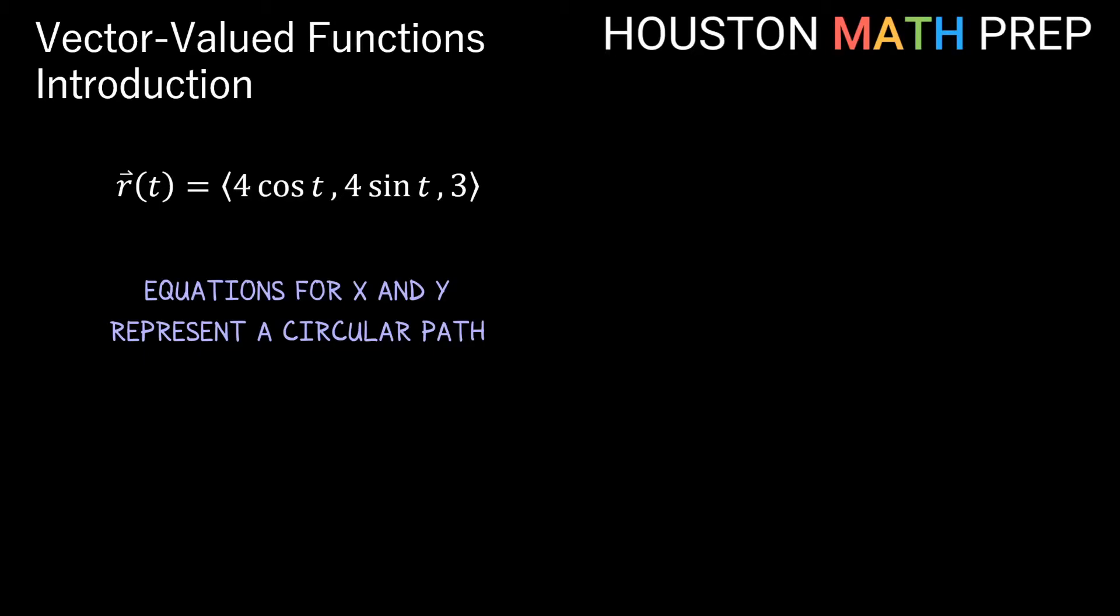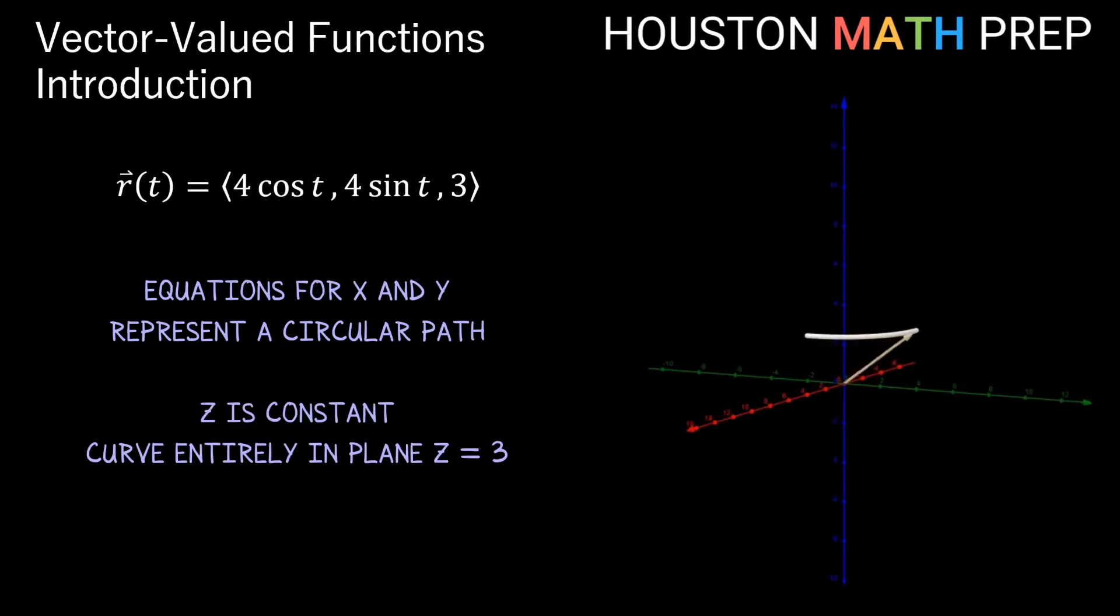Now thinking about this extra requirement that z equals this constant 3, if that's the case then this circular path that all the vectors in this function point to are going to be contained entirely in the plane z equals 3.